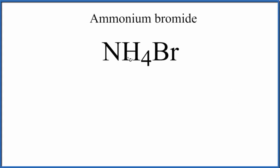In this video, we'll draw the Lewis structure for NH4Br. NH4Br is an ionic compound. That means it's made up of ions.